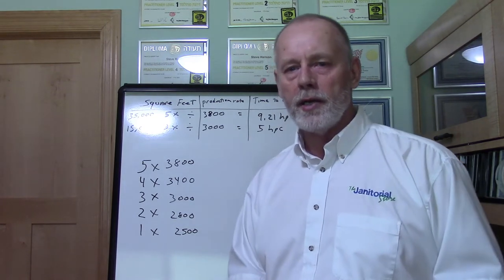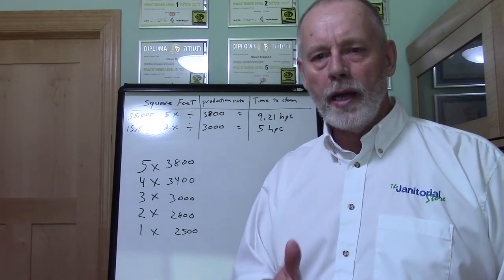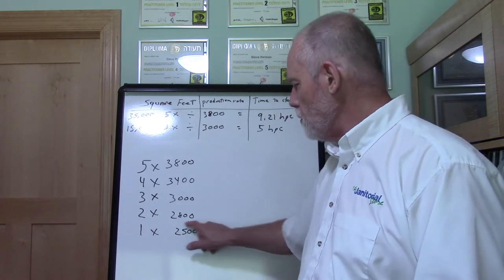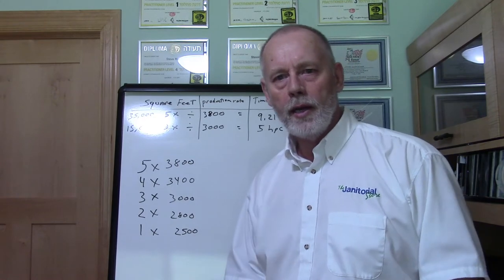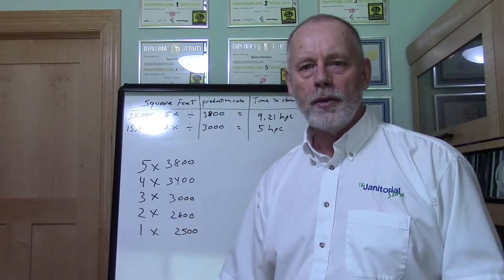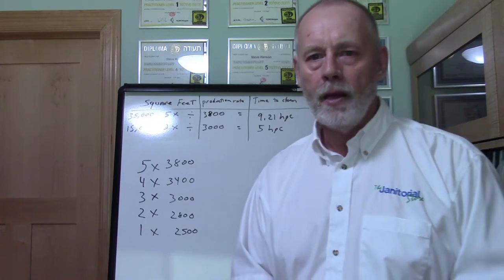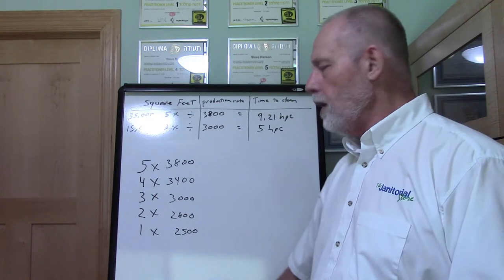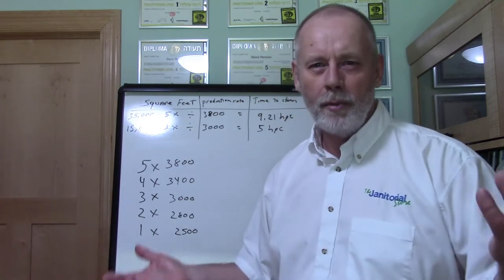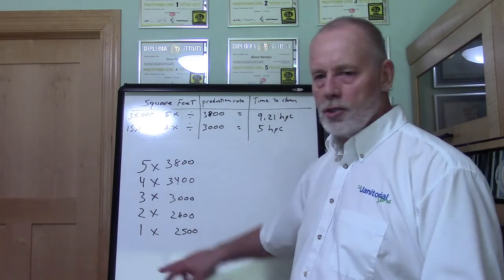If you don't have any accounts yet and you're just getting started, you can use this reference chart to begin. New cleaning companies typically take on small accounts — 3,000 square feet or less — serviced one day per week. In that case, use the 2,500 square feet per hour production rate to arrive at a time to clean. At that rate, you should be able to do a very good, detailed job and make that customer happy.